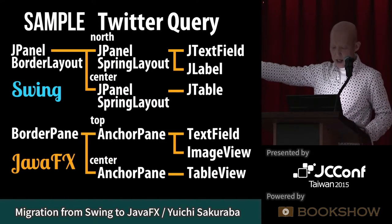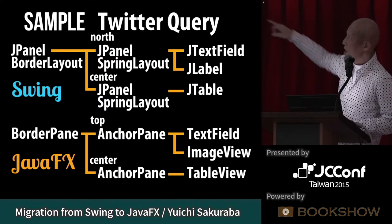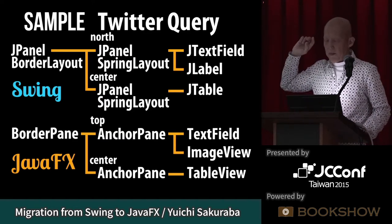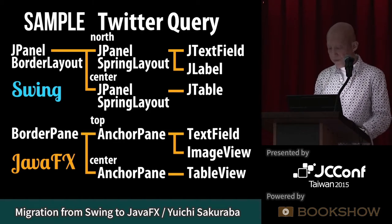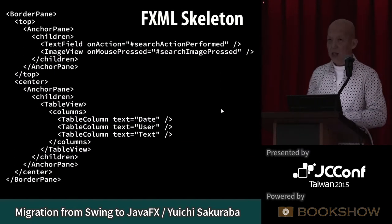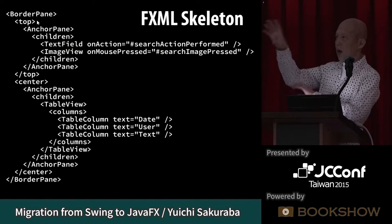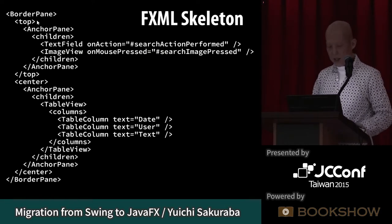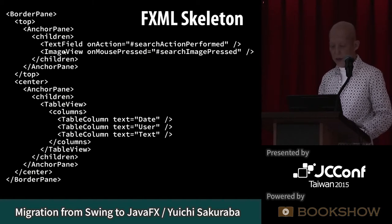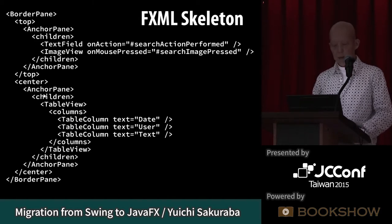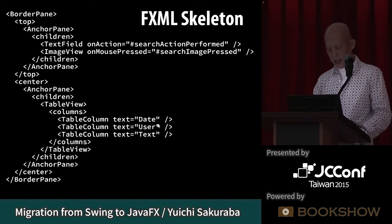It's easy to convert to JavaFX. The top is a BorderPane; the top area is an AnchorPane with two children: a TextField and an ImageView. JLabel was used for an image, but JavaFX supports an ImageView control, so I use ImageView. The center is another AnchorPane containing a TableView. The TableView has three TableColumn elements: date, user, and text. This is the FXML skeleton — the root is BorderPane; the top area is an AnchorPane with TextField and ImageView; the center is an AnchorPane with TableView.